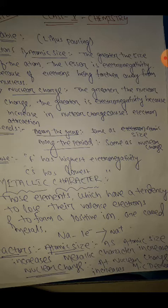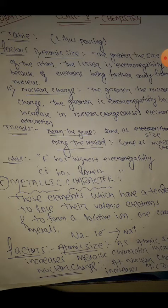The second factor is nuclear charge. When you move from left to right across a period, nuclear charge increases, nuclear pull increases, and the force of attraction between electrons and protons increases. Atoms have more tendency to accept electrons, so electronegativity increases across the period. Down the group, nuclear charge remains almost the same. Fluorine is the highest electronegative element and cesium is the lowest.